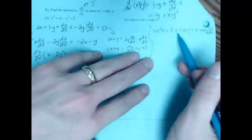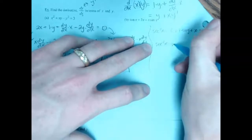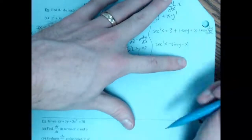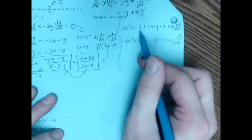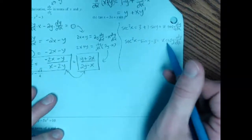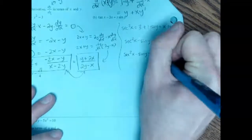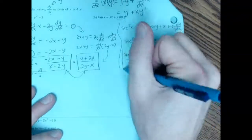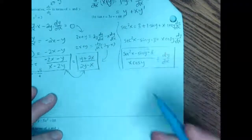Now solving for dy/dx in example B. We have: sec²(x) = 3 + sin(y) + x·cos(y)·(dy/dx). Moving the non-derivative terms to the left: sec²(x) - sin(y) - 3 = x·cos(y)·(dy/dx). Dividing both sides by x·cos(y) gives: dy/dx = (sec²(x) - sin(y) - 3) / (x·cos(y)). You could also rewrite the numerator as -3 - sin(y) + sec²(x) — the order of the addition terms doesn't matter; those are equivalent answers.